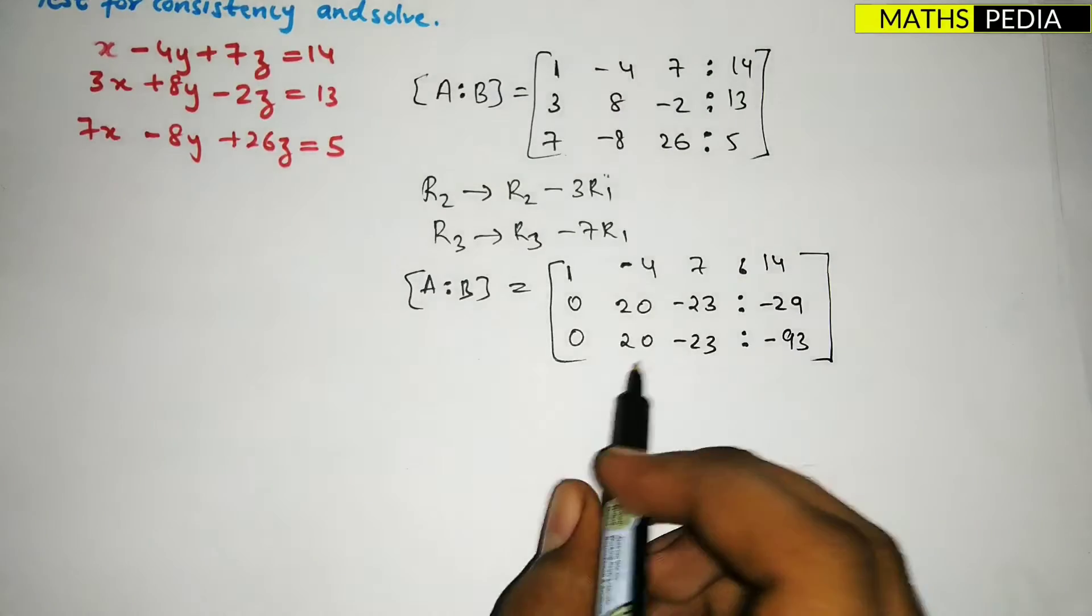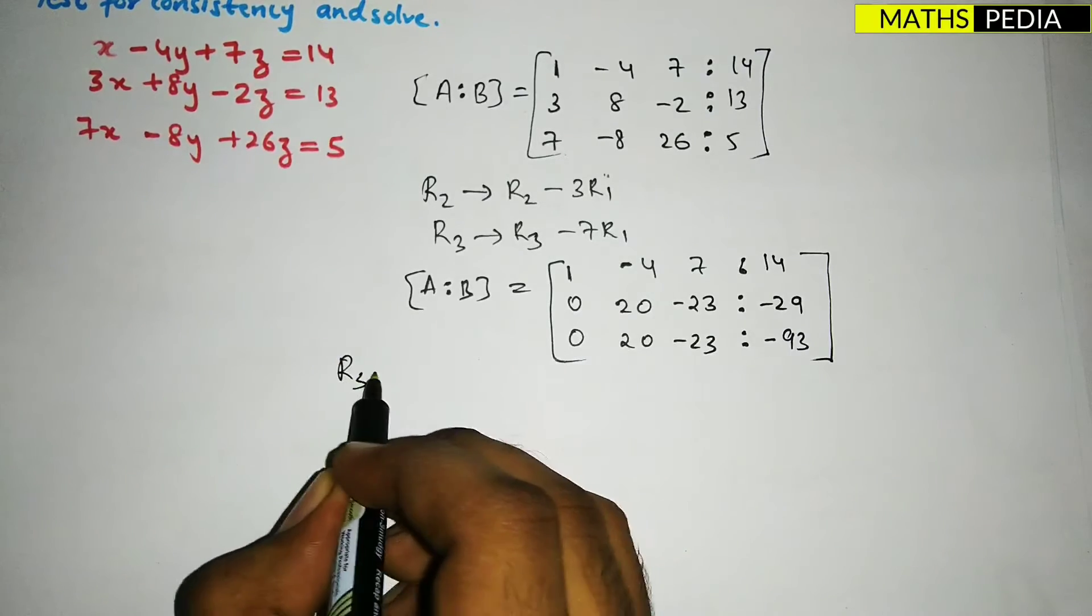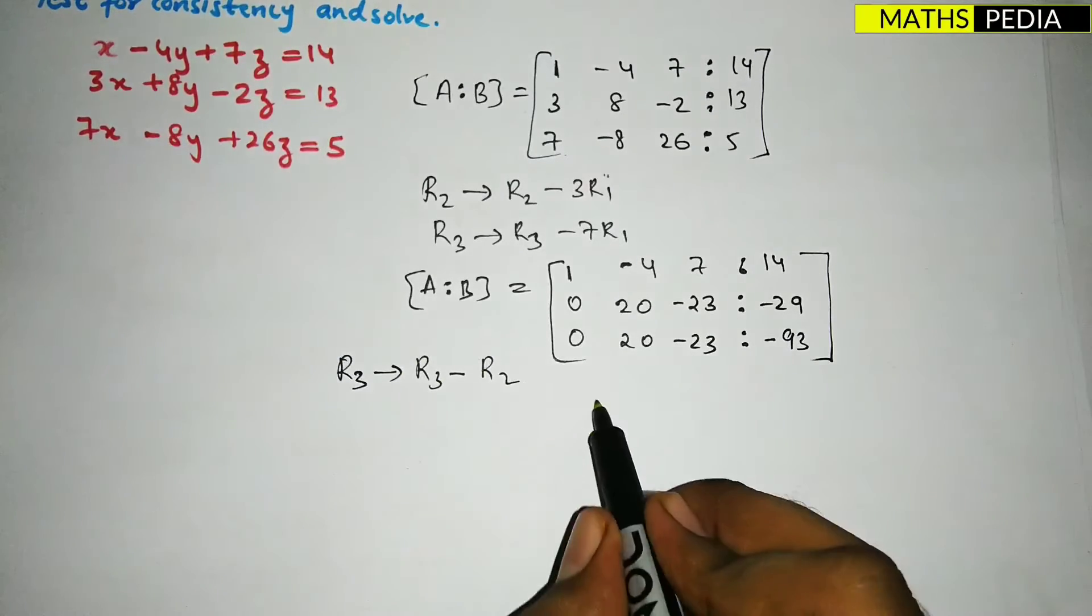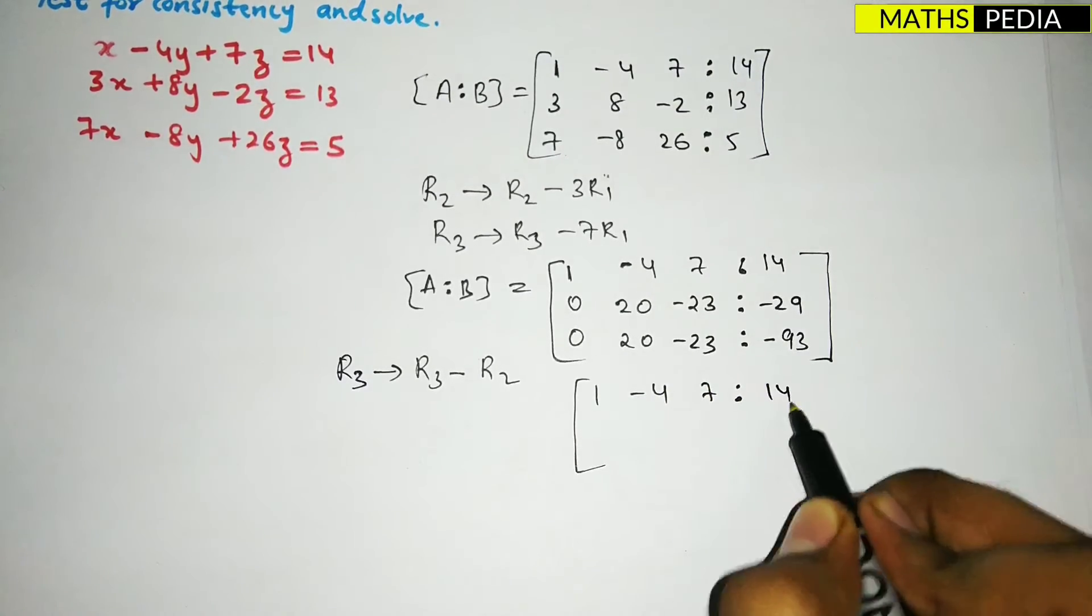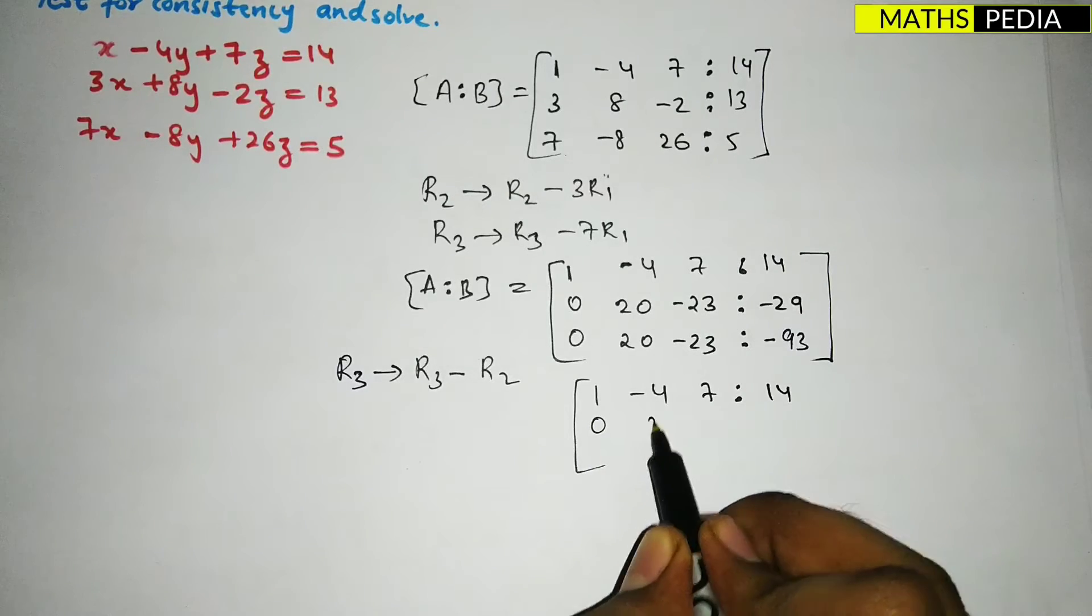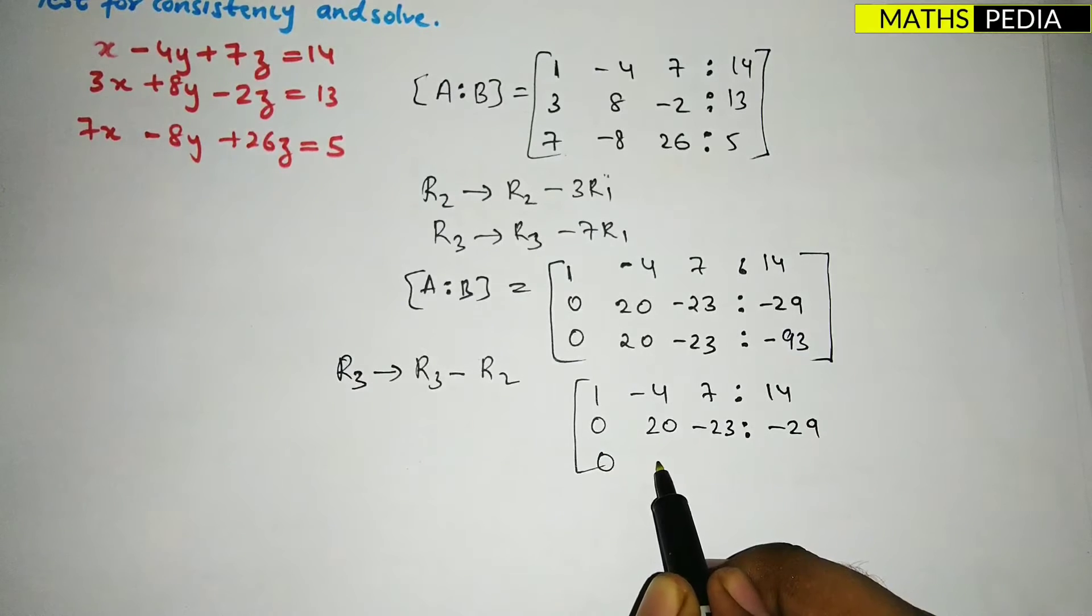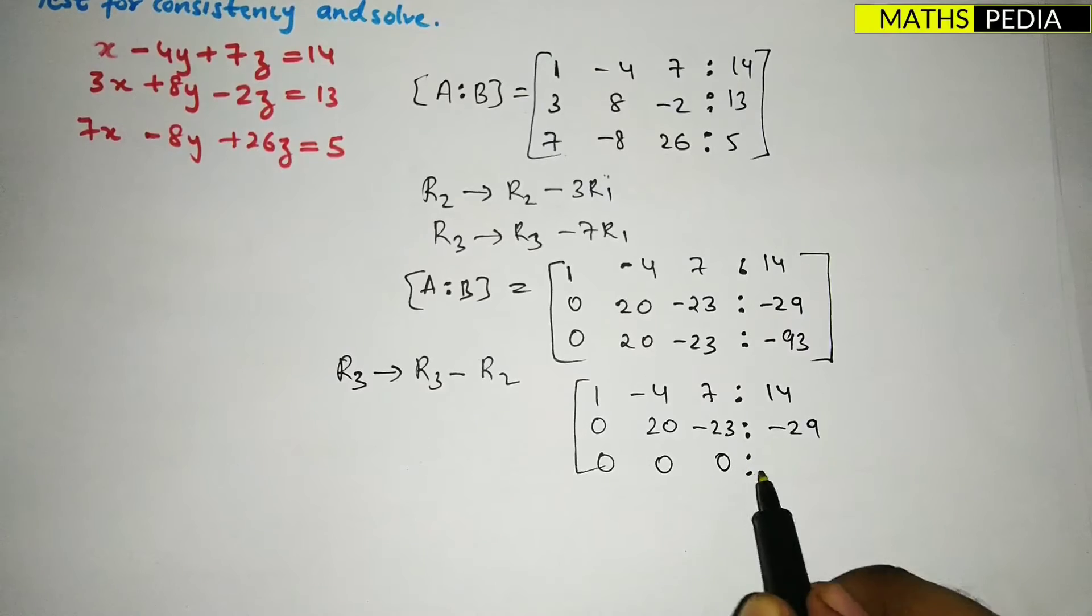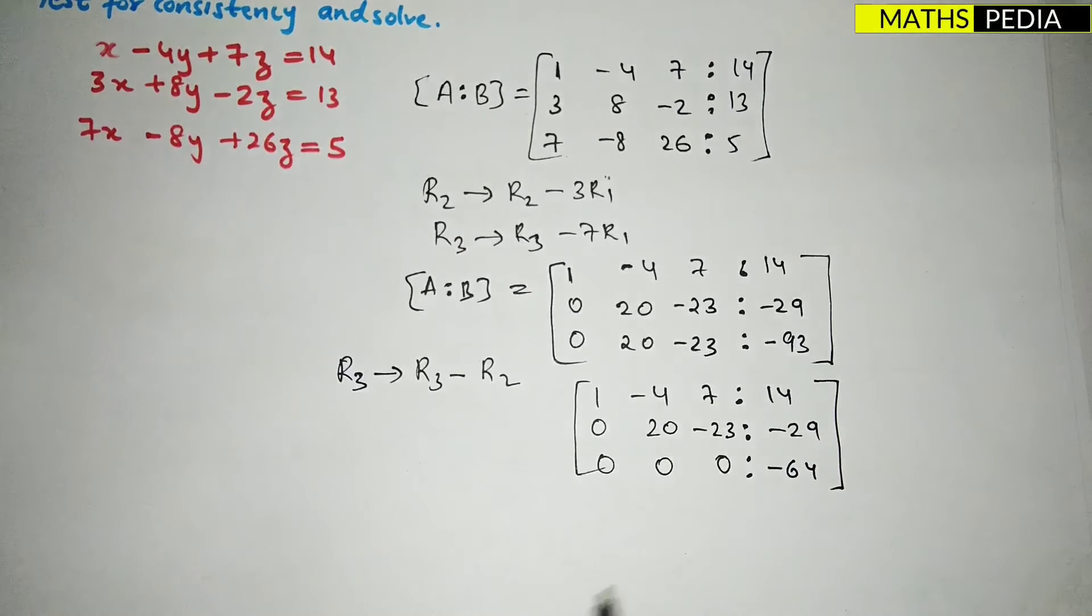And this I have to make zero, so I can just subtract. R3 is R3 minus R2. So it will become 1, -4, 7, 14, then 0, 20, -23, -29, and 0, 0, 0, -64. So this is the reduced form.